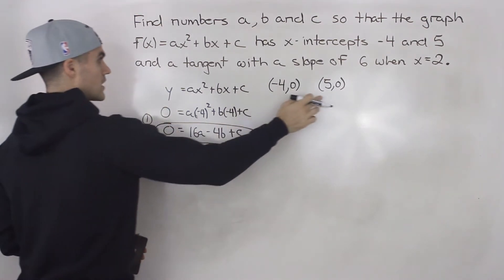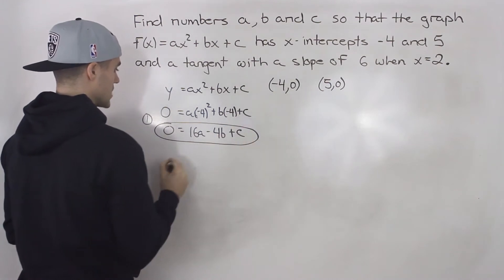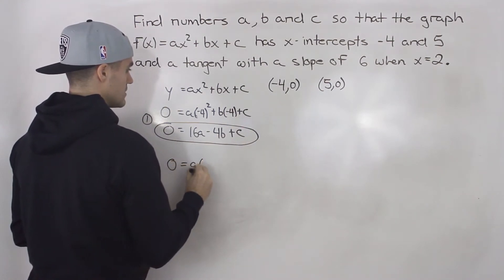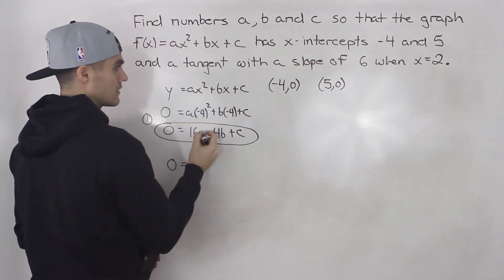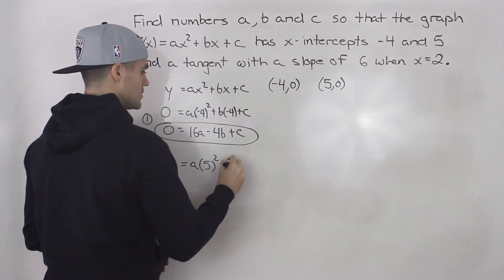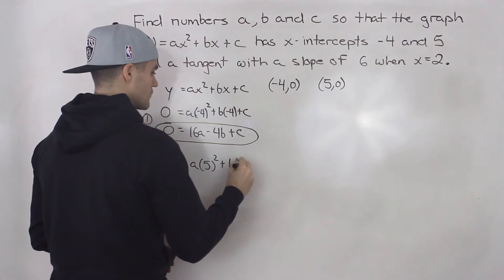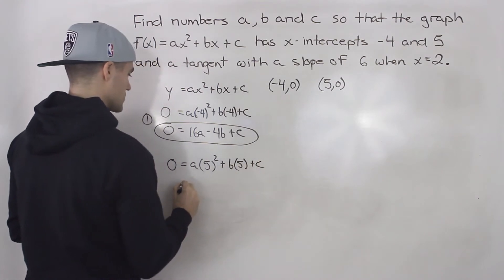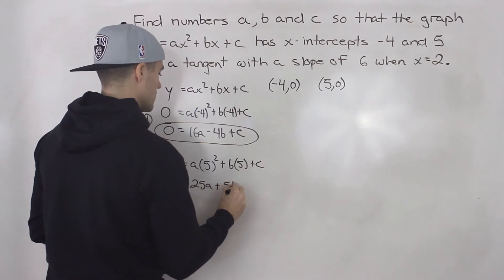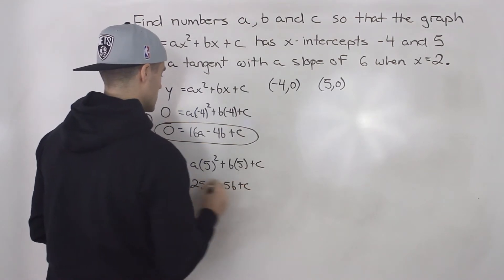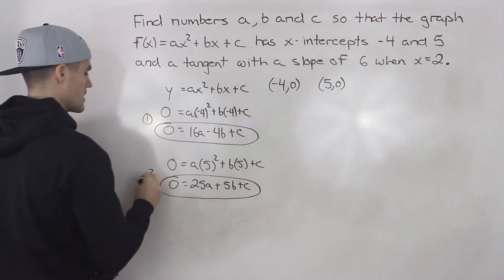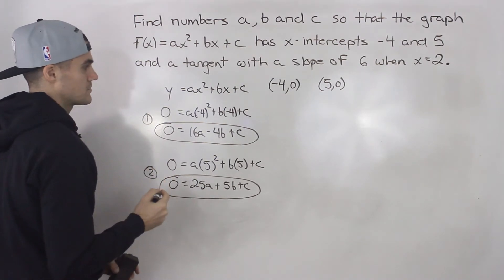We can create another expression with the other x-intercept. We do the same thing: 0 equals a times 5 squared plus b times 5 plus c. So we'd have 25a plus 5b plus c equals 0. That is another expression.